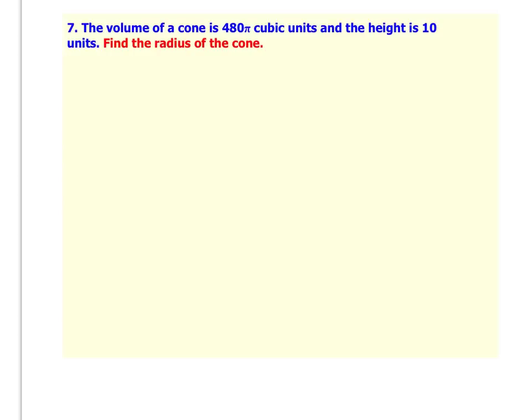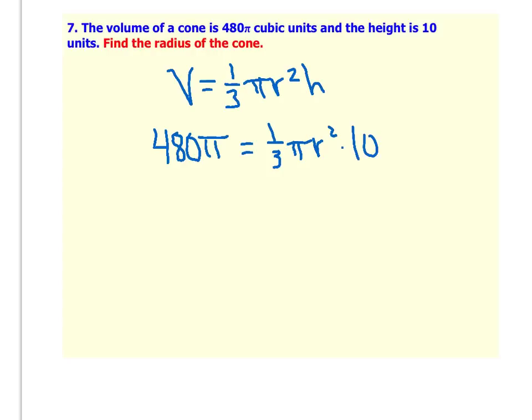We're going to start with our volume formula. Volume of a cone is 1 third times the area of the base, which is pi r squared, times the height of the cone. They tell us what the volume is, so I'm going to plug in 480 pi for the volume equals 1 third pi r squared, because we don't know what r is, times 10, because they tell us that the height is 10.